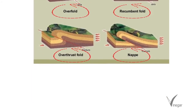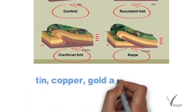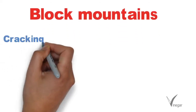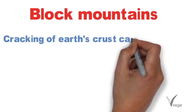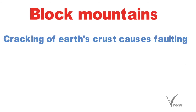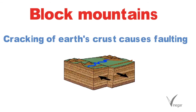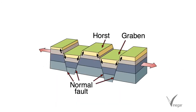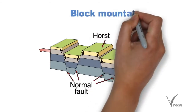Fold mountains are also known as mountains of elevation. The minerals commonly found in them are tin, copper, gold, and petroleum. The next category is block mountains. When Earth's crust is bent, folding occurs, but when it cracks, faulting occurs. When tensional forces are produced because of Earth's movement, it pulls Earth's crust in opposite directions, and because of this a fault is developed. A block trapped inside the fault can either rise or subside.